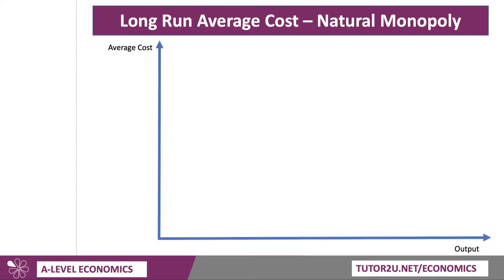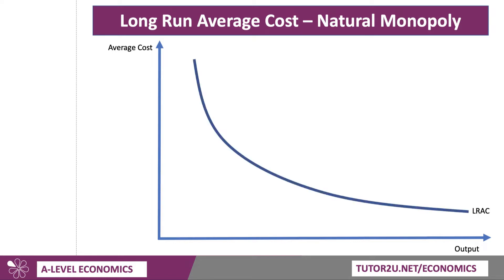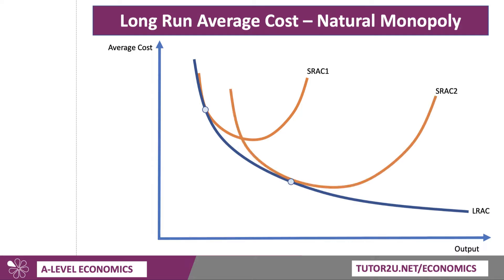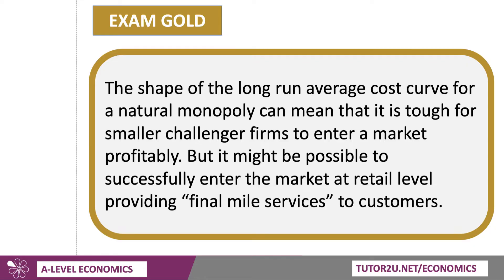Let's quickly work through the diagram. In a natural monopoly, the bigger the scale of production, the lower the unit cost — there's the average cost curve, basically an envelope curve enveloping a series of short-run costs. The shape of that average cost curve makes it tough for smaller challenger firms and new entrants to make a profit, though it might be possible to enter the market at retail level, providing what's called 'final mile' services — things like billing and other customer service.